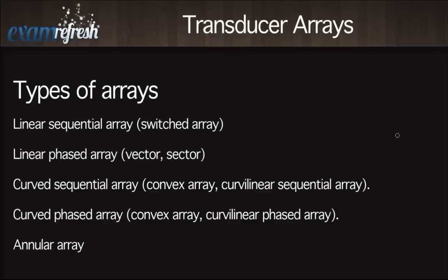We also have a curved sequential array — also called a convex array or curvilinear sequential array — which is typically the one you're most likely using day-to-day. There's also a curved phased array, called a convex or curvilinear phased array. Less common is the annular array; we'll go over it because it is still tested on, and I want you to understand the difference.